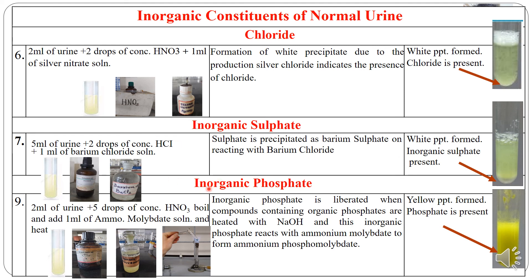For inorganic phosphate: take 2 ml of urine plus 5 drops of concentrated HNO3, boil it, then add 1 ml of ammonium molybdate solution and heat. Inorganic phosphate reacts with ammonium molybdate to form ammonium phosphomolybdate, which is yellow — also known as canary yellow. A yellow precipitate forms and indicates the presence of inorganic phosphate.